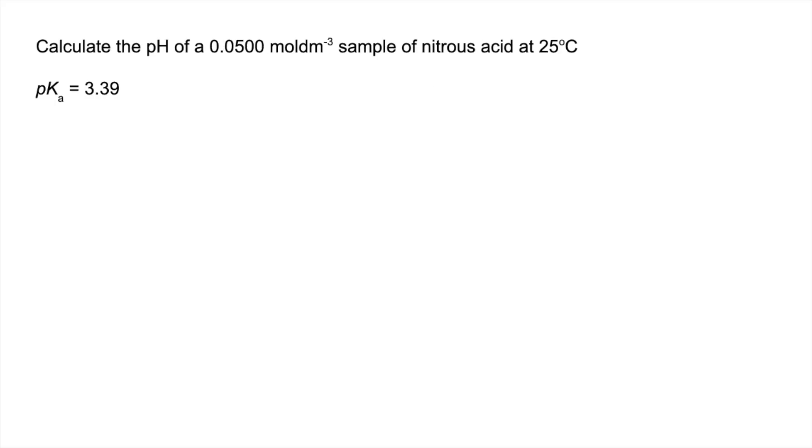Moving on to the final question, we've got to calculate the pH of nitrous acid. Again, we'll finish with this formula here. How do we get the H+ concentration? We use the same formula from the first question. The only tricky bit is we've got the HA concentration, 0.05, but we haven't got Ka—we've been given pKa.